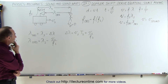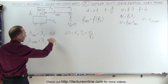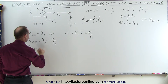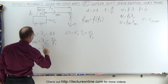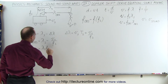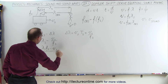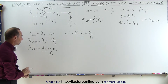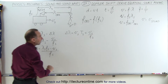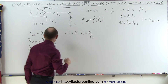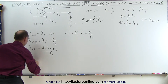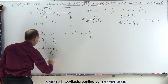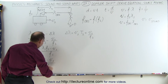Let's bring this together. Writing the right side over a common denominator, λ_obs = (λ_s × F_s − V_s) / F_s. Notice that λ_s × F_s equals the velocity of sound in air, so we can make that substitution: λ_obs = (V − V_s) / F_s.